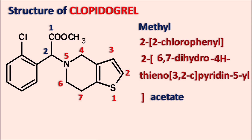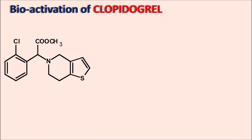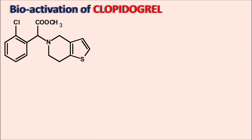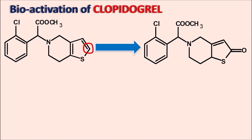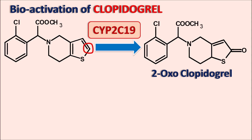Clopidogrel acts as a prodrug and requires bioactivation, undergoing structural change to produce an active metabolite with a free thiol group. Initially, clopidogrel is oxidized at the second position of the thienopyridine ring system, producing a metabolite with an oxo group at that position — the 2-oxo clopidogrel derivative. This oxidation reaction is mediated by the cytochrome P450 system, and CYP2C19 is one of the most important enzymes responsible for this bioactivation.